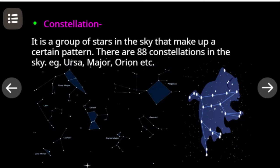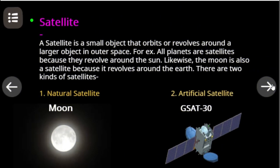A satellite is a small object that orbits or revolves around a larger object in outer space. For example, all planets are satellites because they revolve around the sun. Likewise, the moon is also a satellite because it revolves around the earth. Satellites are of two types: natural and artificial.